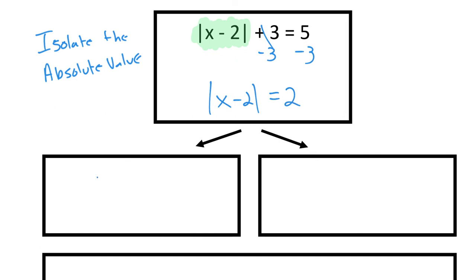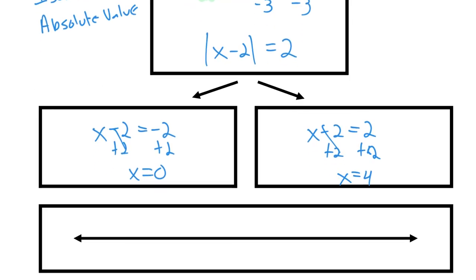So I'm going to have x minus 2 is negative 2, x minus 2 is positive 2. Add 2 to both sides. x can be 0. x can be 4. So for my points, if I want, this one doesn't take much to write. 1, 2, 3, 4. Those are my two solutions.